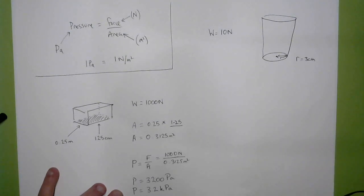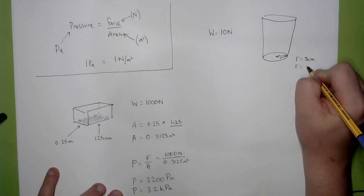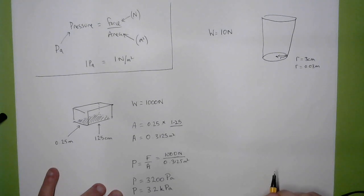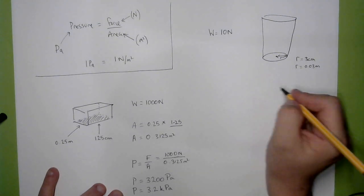First thing we need to do, convert the radius to metres, 0.03 metres. This is 100 centimetres in a metre. Think about the area of this.